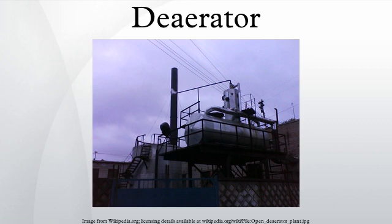Tray type deaerator: The typical horizontal tray type deaerator has a vertical domed deaeration section mounted above a horizontal boiler feed water storage vessel. Boiler feed water enters the vertical deaeration section above the perforated trays and flows downward through the perforations. Low pressure deaeration steam enters below the perforated trays and flows upward through the perforations. Some designs use various types of packed bed, rather than perforated trays, to provide good contact and mixing between the steam and the boiler feed water.